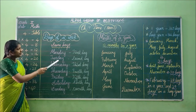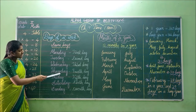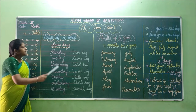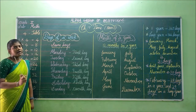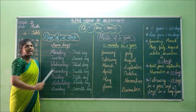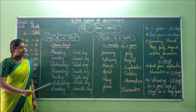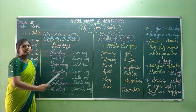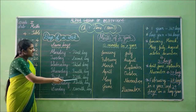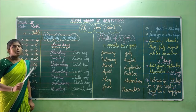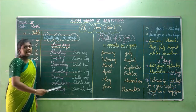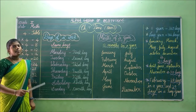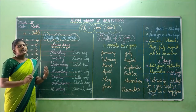Monday is the first day of the week. Tuesday is the second day of the week. Wednesday is the third day of the week. Thursday is the fourth day of the week. Friday is the fifth day of the week. Saturday is the sixth day of the week. And Sunday is the seventh day of the week. So there are totally 7 days.